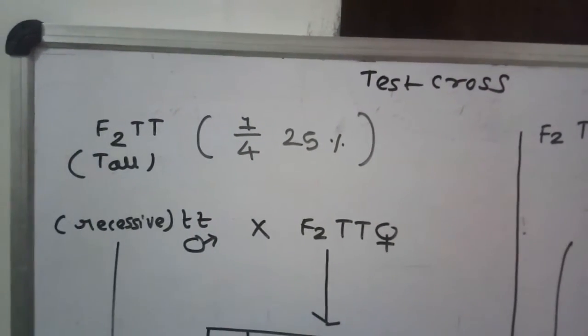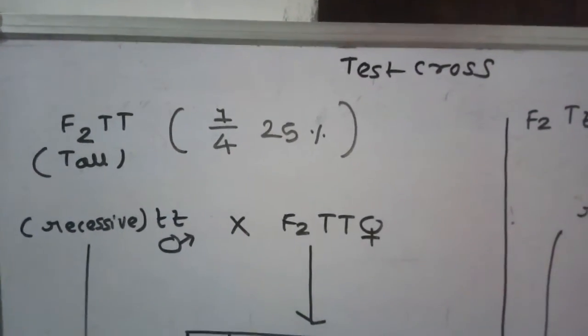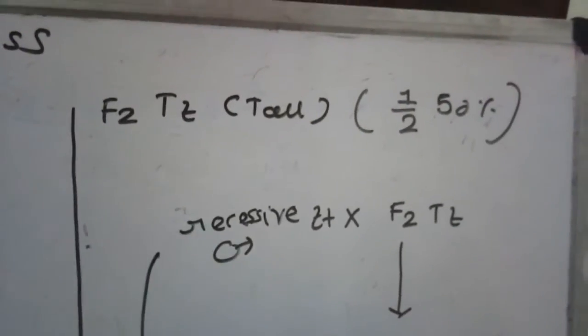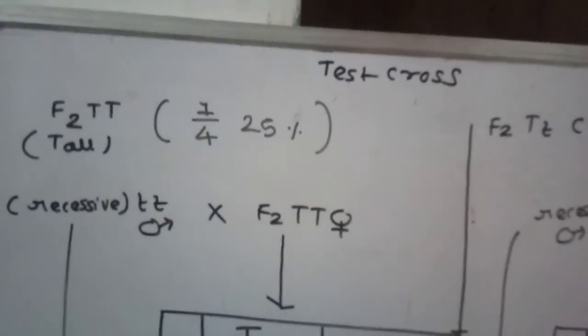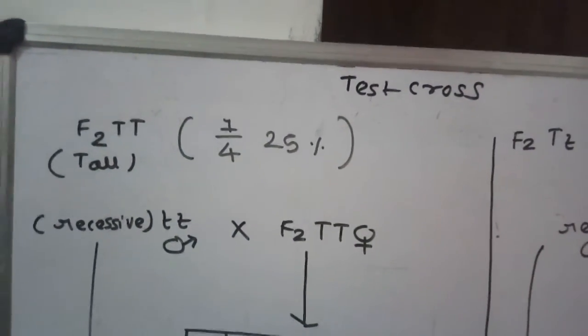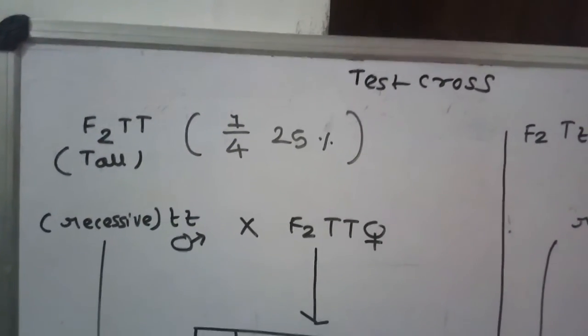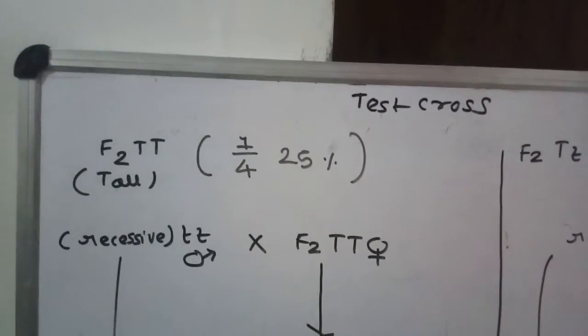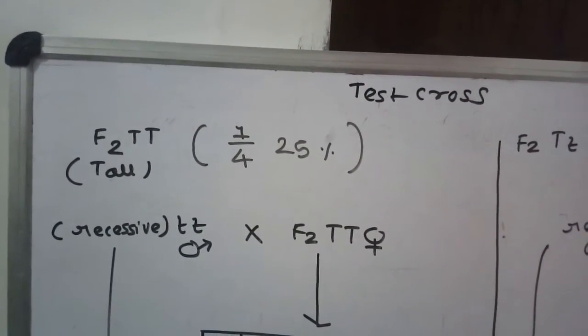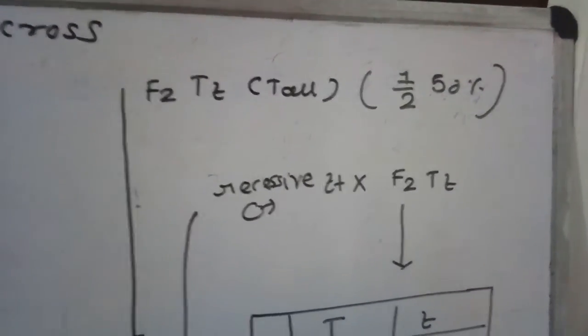Test cross is used here to know the genotype of an organism. The organism here is the F2 plants. Using test cross we will determine genotype of F2 plants, whether they are homozygous dominant capital T capital T or heterozygous dominant capital T small t.